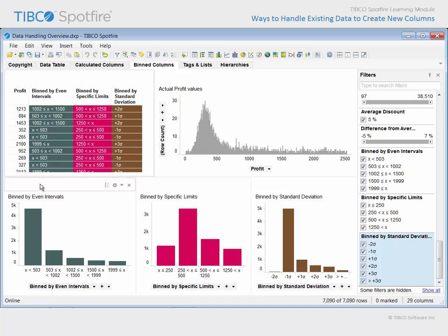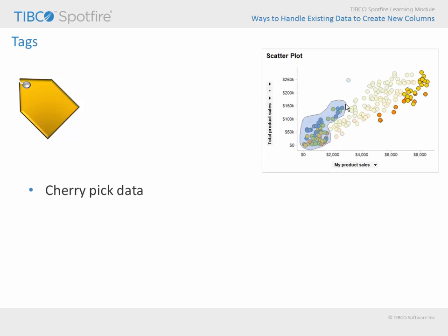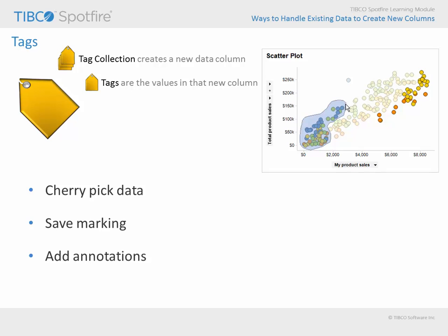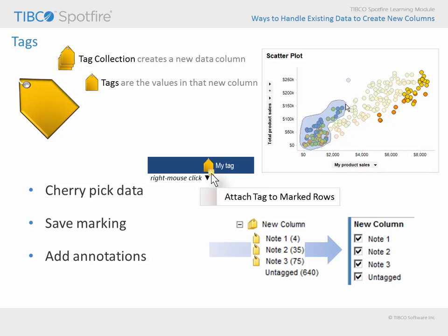While each of these approaches uses numerically defined limits to take continuous data and group it into categories, tags are another option for generating new categorical data columns. With tags, you can cherry-pick data using marking so that it can be defined as a group. You might even consider this a mechanism to save a marking because the marked values are annotated with tag names. When you create a tag collection, it creates a new column in the underlying data table. The names of the tags within that collection are the values in the new column. As you actively attach each tag to the current marked data set and repeat, you are essentially building a new column of data with appropriate values — which you might consider custom labels, annotation, or simply a new categorical group assignment.